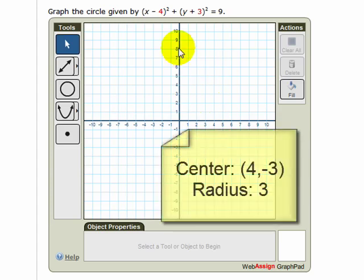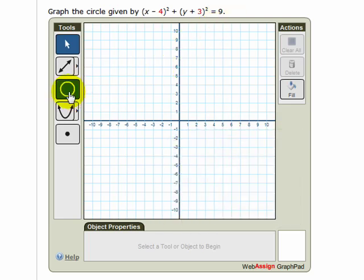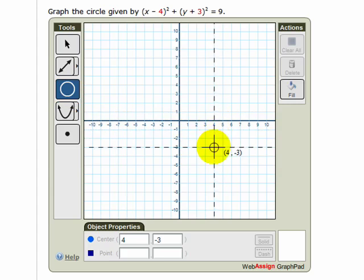In this case, we know that the center is at the point 4, negative 3, and that the radius is 3. We'll start by choosing the circle tool and plotting the center. The center is at 4, negative 3, so we click to plot the center, and then we can use the radius to plot another point.